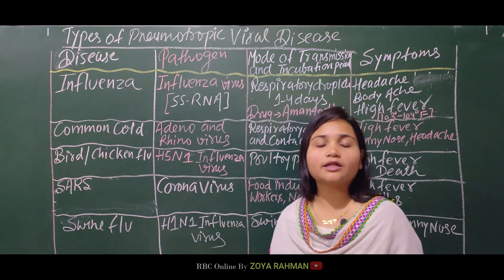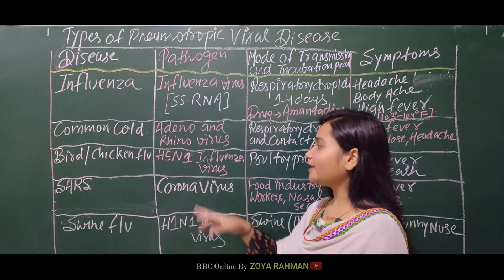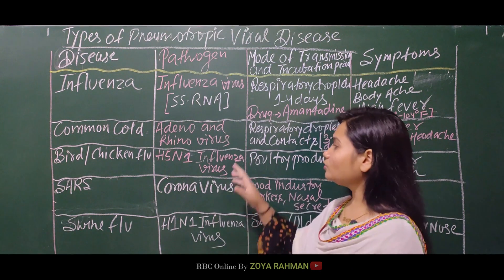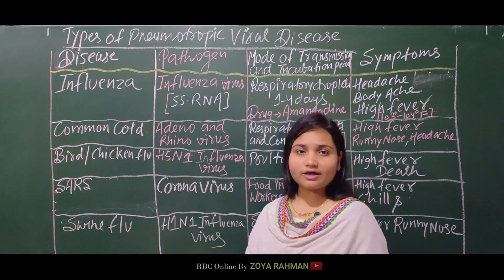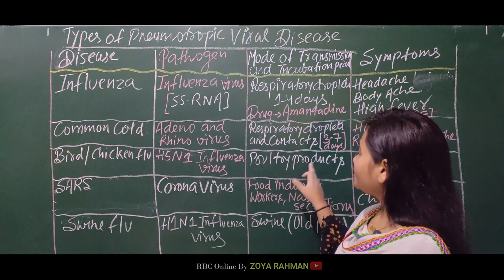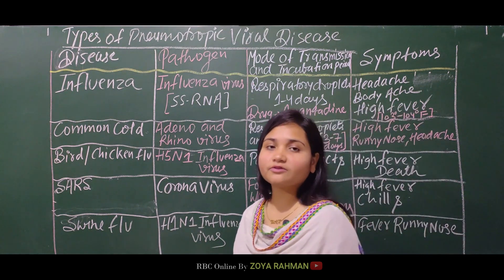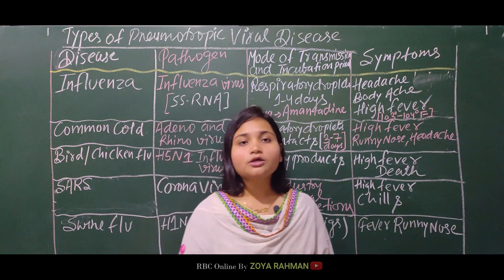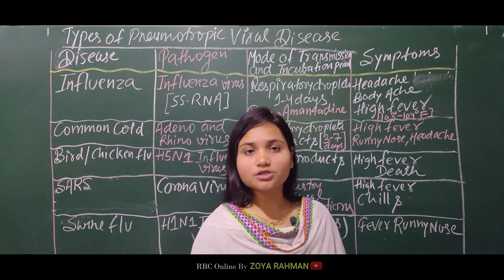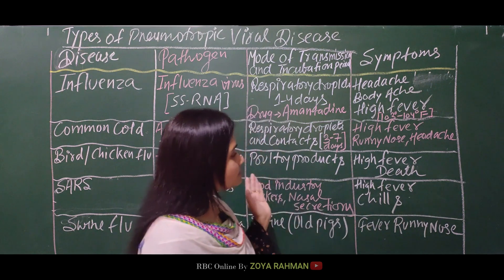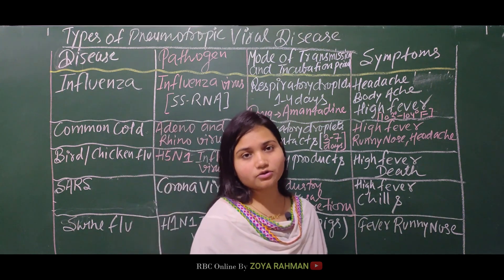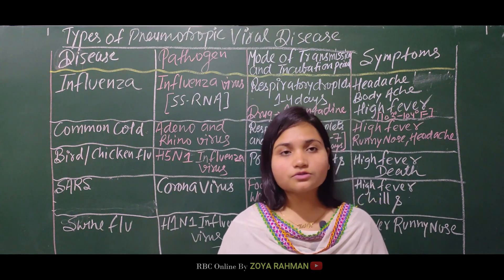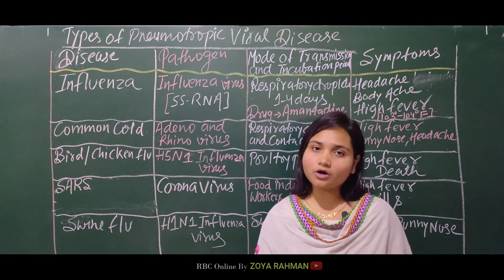Next is bird flu, also called chicken flu. The causative agent is the H5N1 influenza virus. It spreads from poultry products — if chickens are infected and people eat chicken or eggs, it can affect humans. Symptoms include high fever, and it can cause death. It is a secondary disease that first exists in birds before reaching humans.